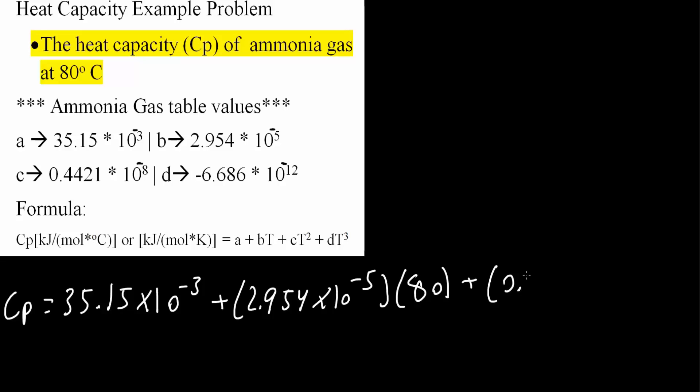So we have 0.4421 times 10 to the negative 8. And the value of T is still the same, 80 degrees Celsius. Now in our formula T is squared for C, so T would be squared.